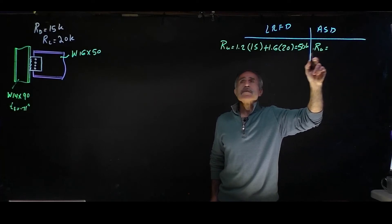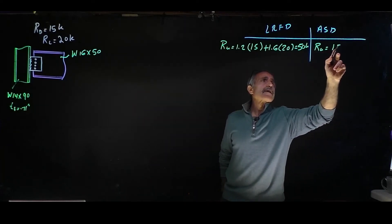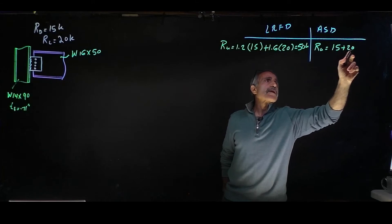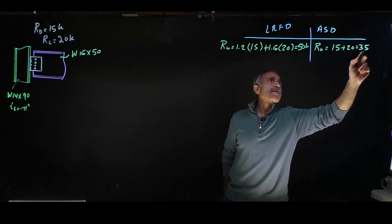Ra is going to be basically adding both of them: 15 plus 20 equals 35 kips.